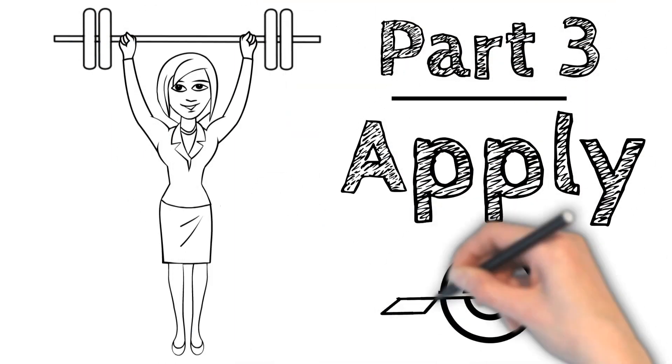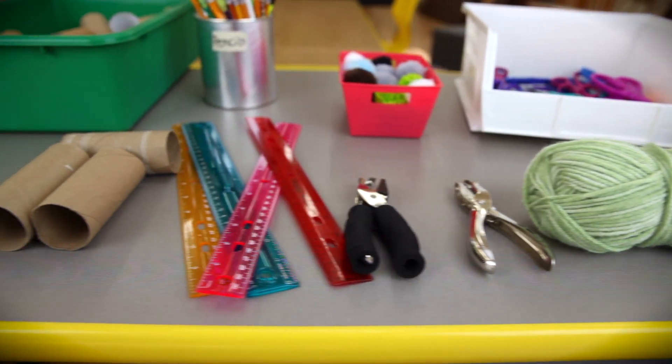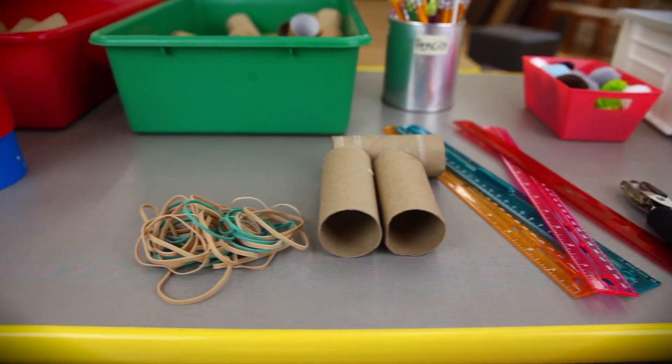Part 3: Apply. My idea is to have kids build a simple cotton ball launcher using toilet paper tubes and some rubber bands.